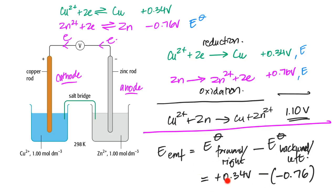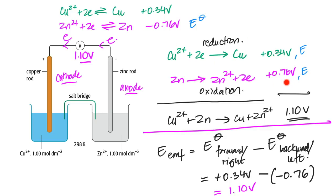Both ways give 1.10 V. Don't use the right-hand electrode minus left-hand electrode rule — that would give −0.76 − 0.34 = −1.10 V, which is wrong. The correct EMF is 1.10 V, calculated as E°(forward) − E°(backward), or equivalently E°(forward) + the flipped E of the backward equation. Flipping the sign is equivalent to subtracting, and both give the same cell EMF.